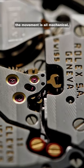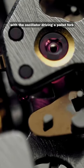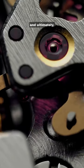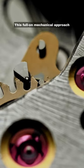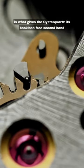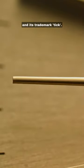From there the movement is all mechanical with the oscillator driving a pallet fork that provides motion to the going train and ultimately the hands. This full-on mechanical approach is what gives the Oyster Quartz its backlash-free second hand and its trademark TIC.